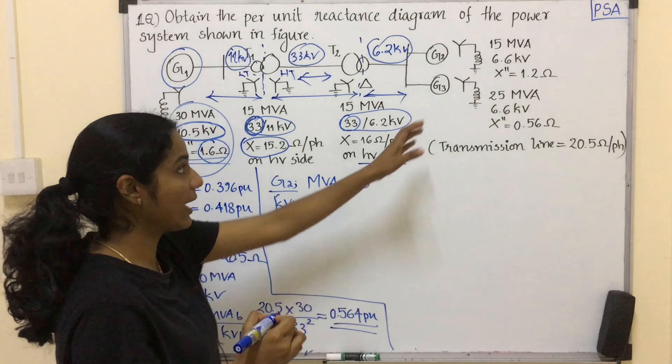Now let's see the value for G3 — this is the only element left to calculate the per-unit value. For G3, MVA base equals 30 and KV base equals 6.2 kV. The per-unit value equals the actual value 0.56 multiplied by 30 divided by 6.2 squared, which is equal to 0.437 per unit. Now we have all the per-unit values for all elements in this single line diagram.